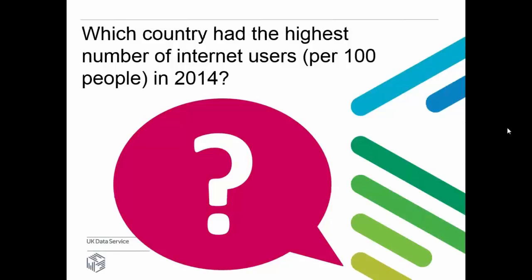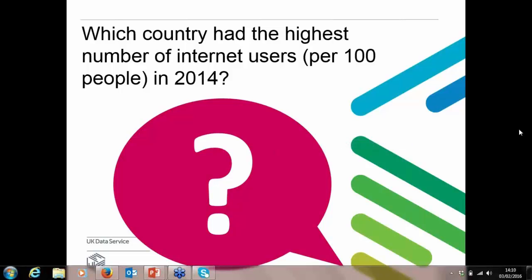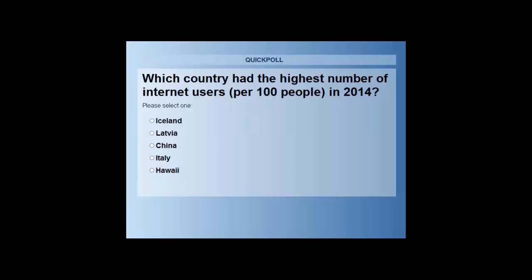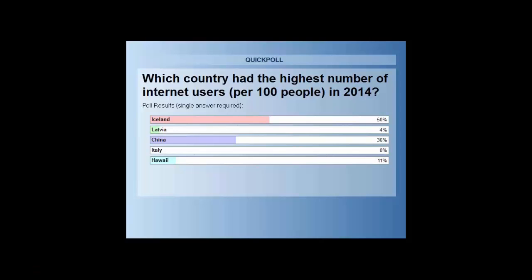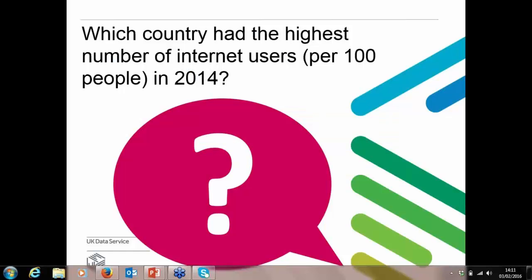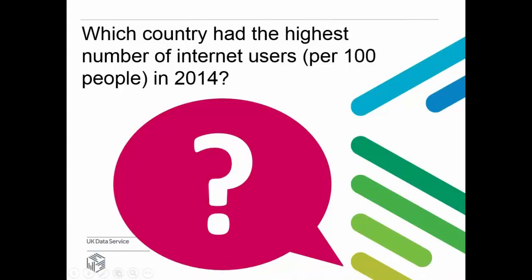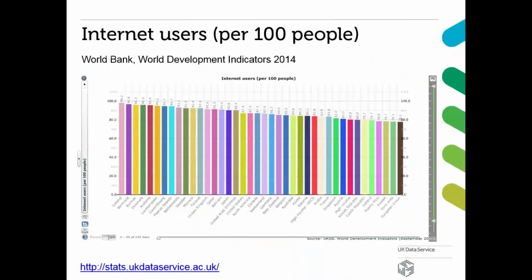Which country had the highest number of internet users per 100 people in 2014 according to the World Bank? 50% of you said Iceland, 4% said Latvia, 36% said China, 0% said Italy, and 11% said Hawaii. Most of you were right — it is Iceland. Iceland had the highest number of internet users per 100 people in 2014.